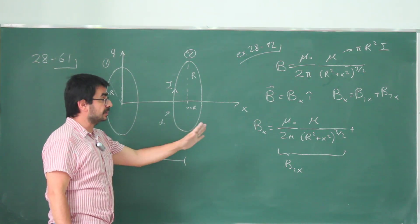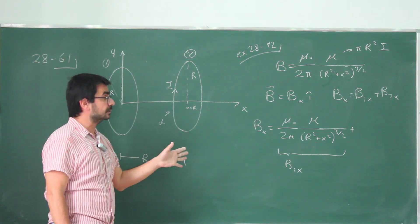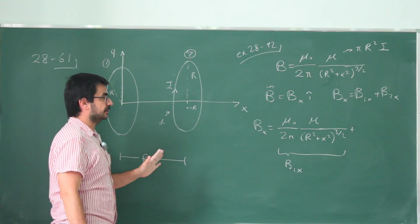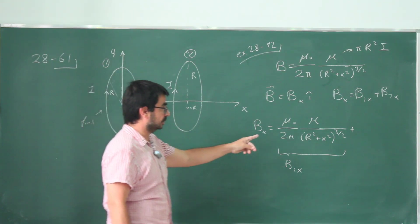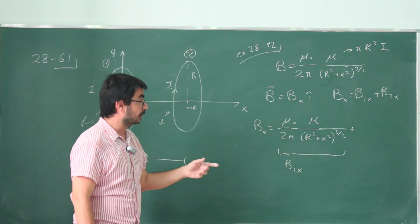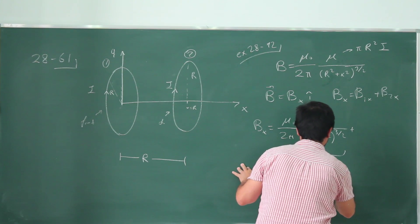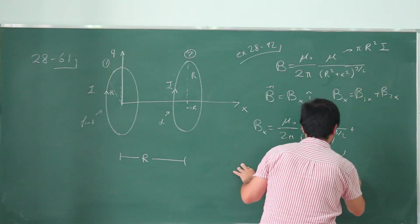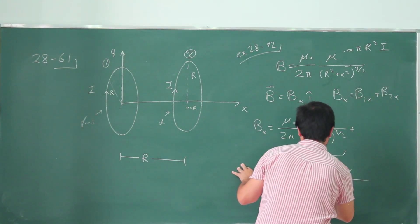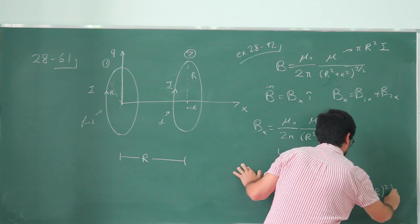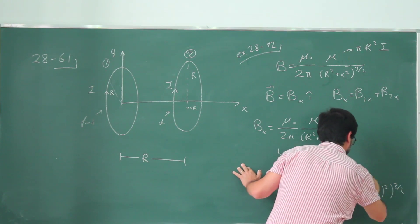Now, this is the same expression, but x is just shifted by R. So the question is, do I add or subtract capital R from the x in this expression, and the answer is you subtract it. First, let me write this down, and then I'm going to justify why that is so. Mu naught mu, 2 pi R squared plus x minus R squared to 3 halves.